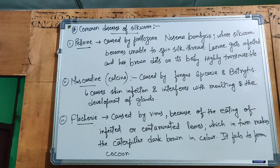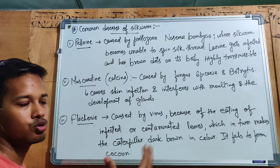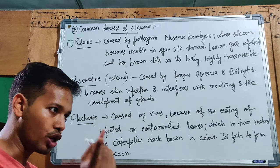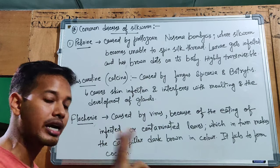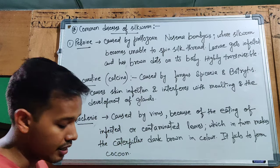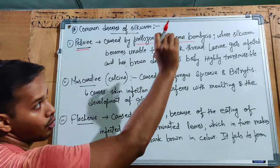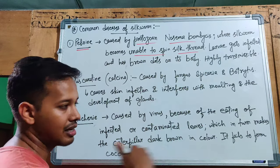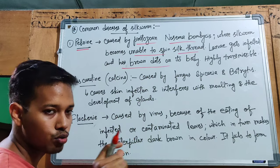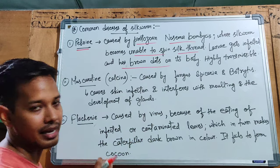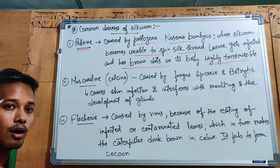Now we discuss diseases of silkworms. The first is Pebrine, caused by a protozoan. The silkworm becomes unable to spin silk thread. The larva gets infected and shows brown dots on its body. This is a highly transmissible disease — it can spread from one larva to another — so infected larvae must be removed immediately.